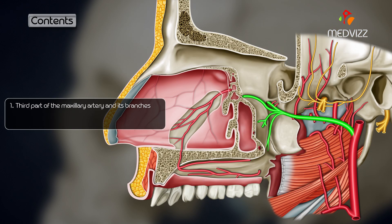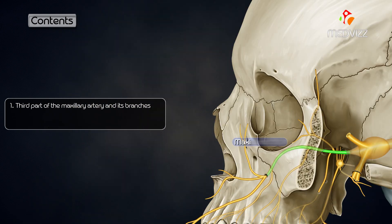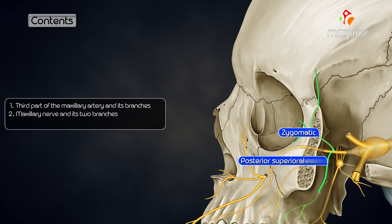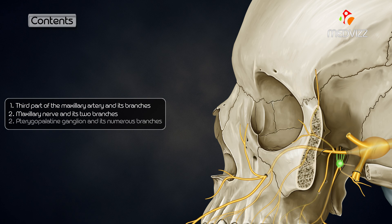Laterally, it communicates with the infratemporal fossa through the pterygomaxillary fissure, and inferiorly with the oral cavity through the palatine canal. Contents include: the third part of the maxillary artery and its branches, which bear the same names as the branches of the pterygopalatine ganglion and accompany all of them; the maxillary nerve and its two branches — the zygomatic and posterior superior alveolar nerves; and the pterygopalatine ganglion with its numerous branches, containing fibers of the maxillary nerve mixed with autonomic nerves.